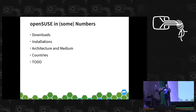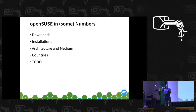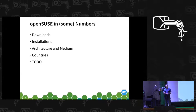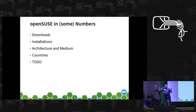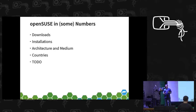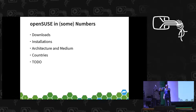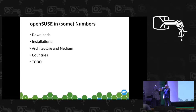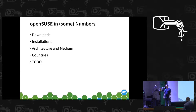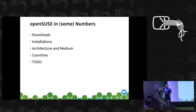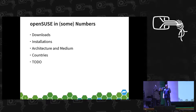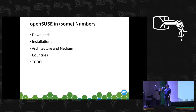This is more or less what we are going to talk about. We are going to talk about LoaS, the number of installations that we have now, how architectures and the medium have evolved. Medium is how people usually install our distribution. I have a small slide about the countries — where are the people using OpenSUSE? And some to-do stuff that I think is a good opportunity to address at events like this.